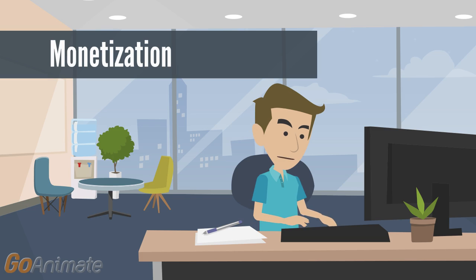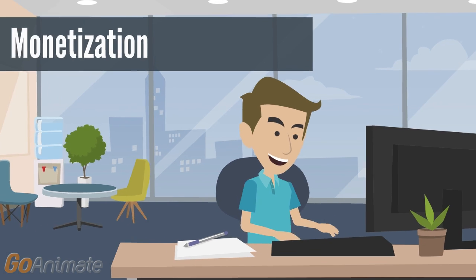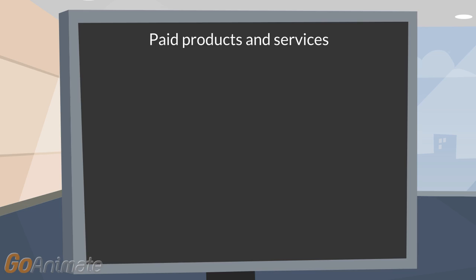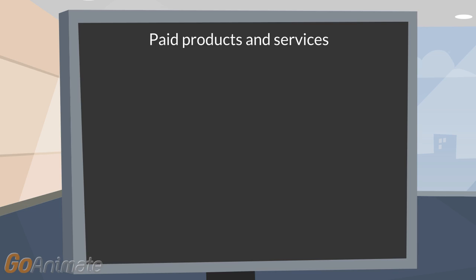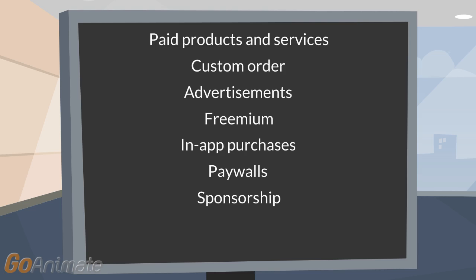Okay, I found some. Paid products and services. Custom order. Advertisements. Freemium. In-app purchases. Paywalls. Sponsorship.